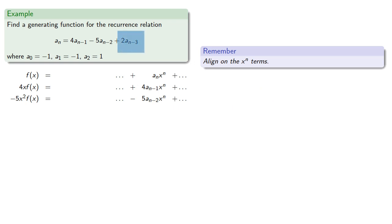Our recurrence relation has a 2a_{n-3} term. We want 2a_{n-3} x^n, and in our function we have a_{n-3} x^{n-3}. So multiplying by 2x cubed gives us 2a_{n-3} x^n.